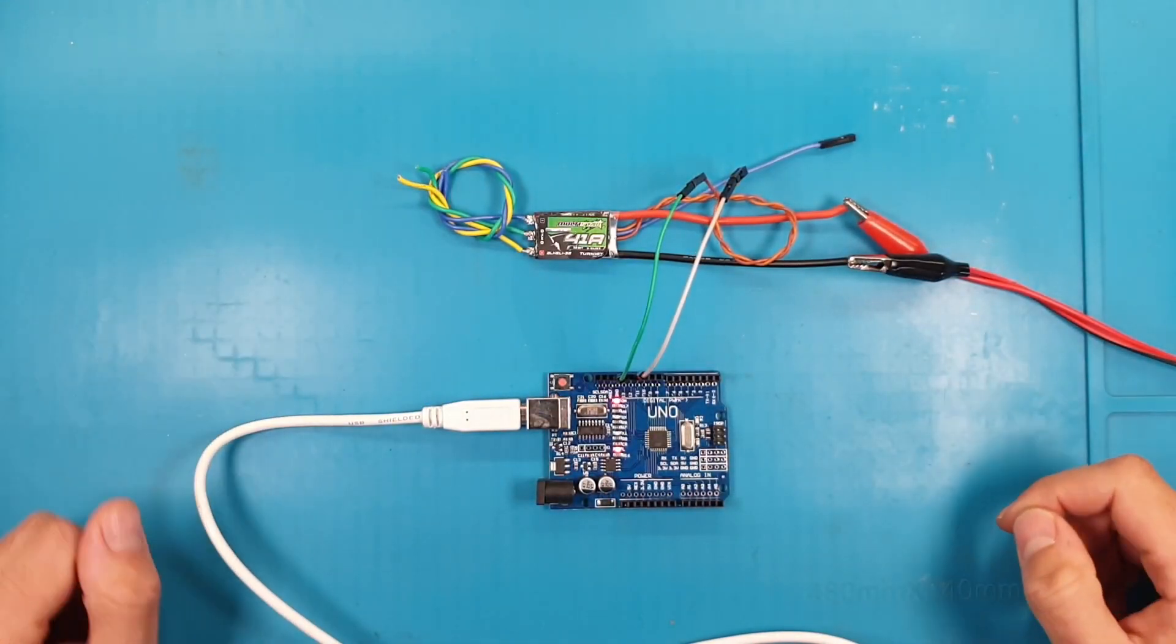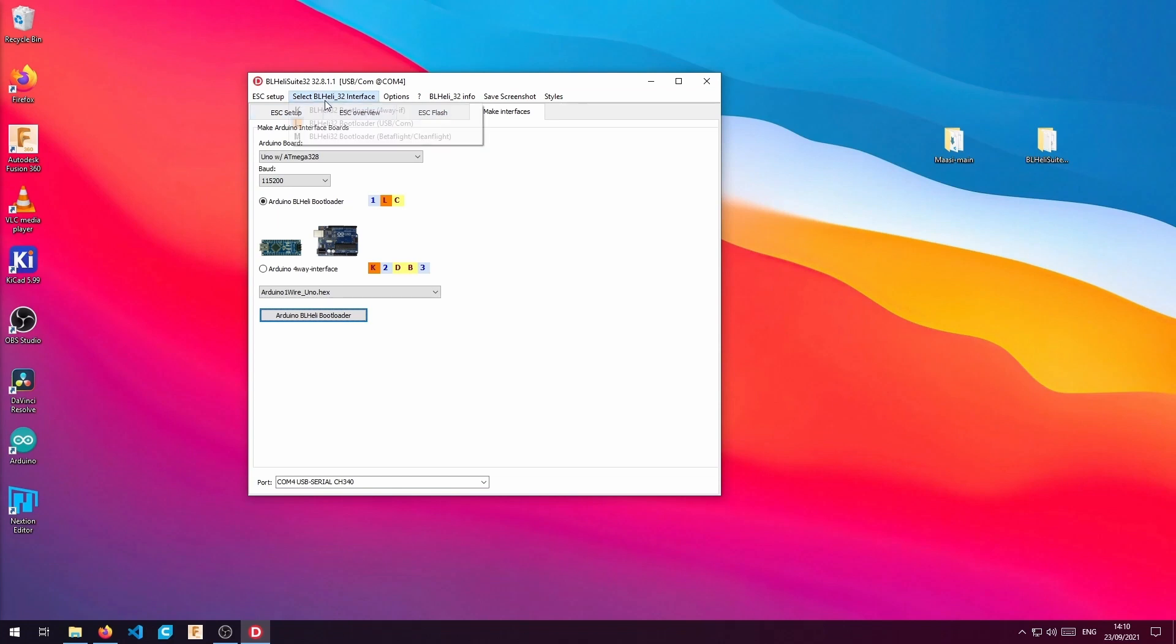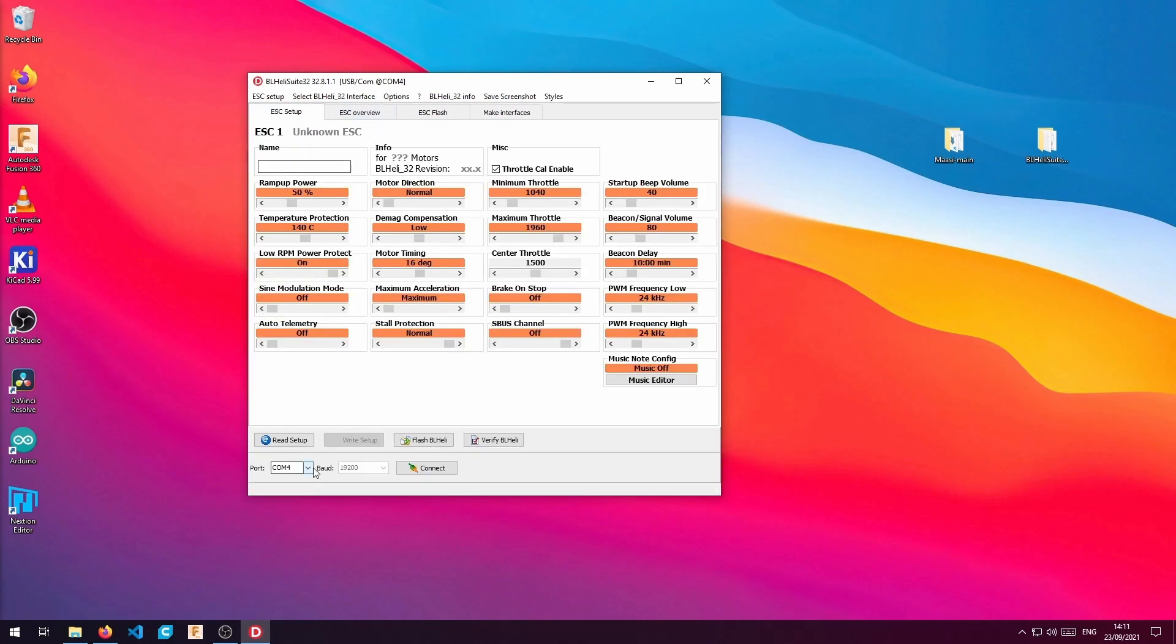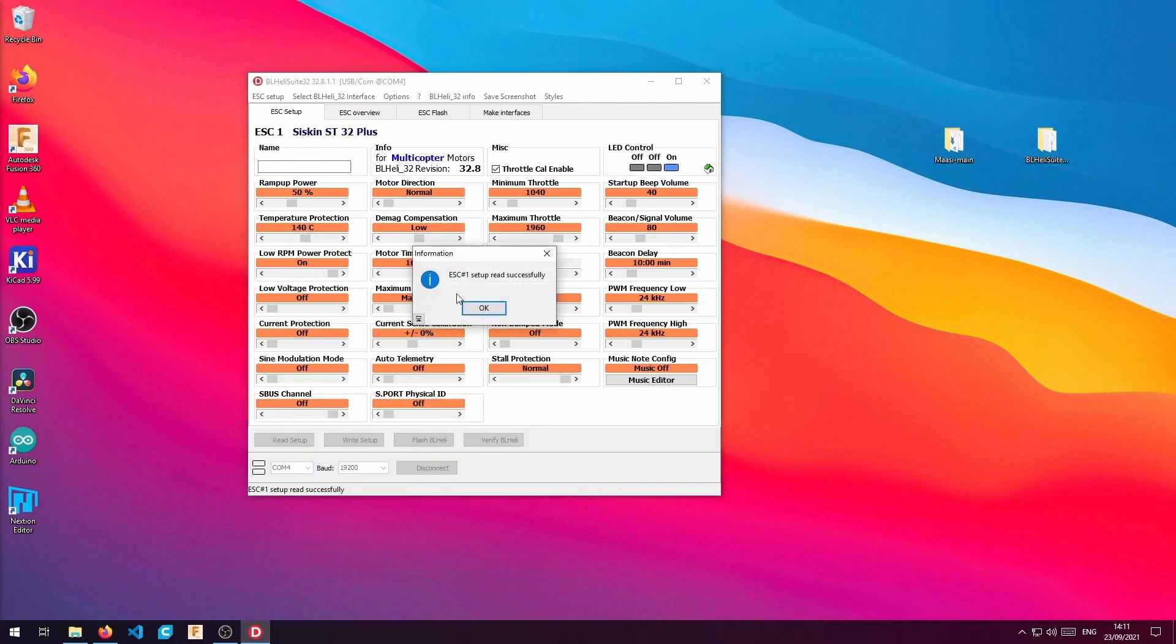We can either use a lab power supply or the one for our spin coater. Now in the software we have to choose the USB COM option and make sure the COM port is the correct one. Now we connect and we read the setup.